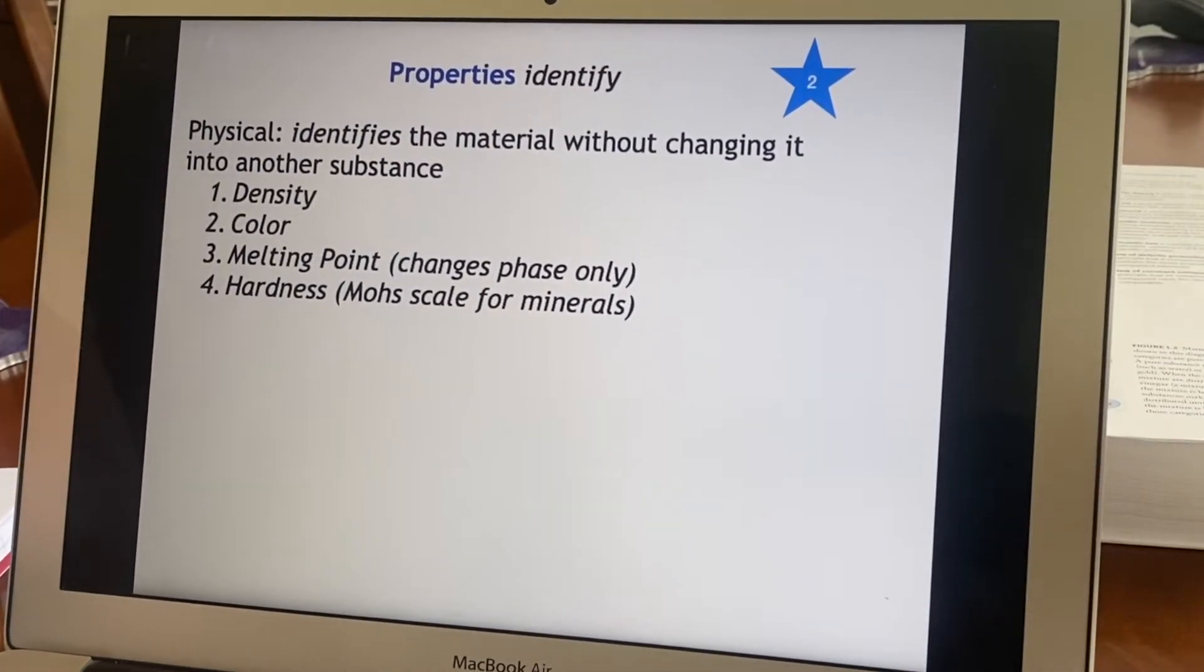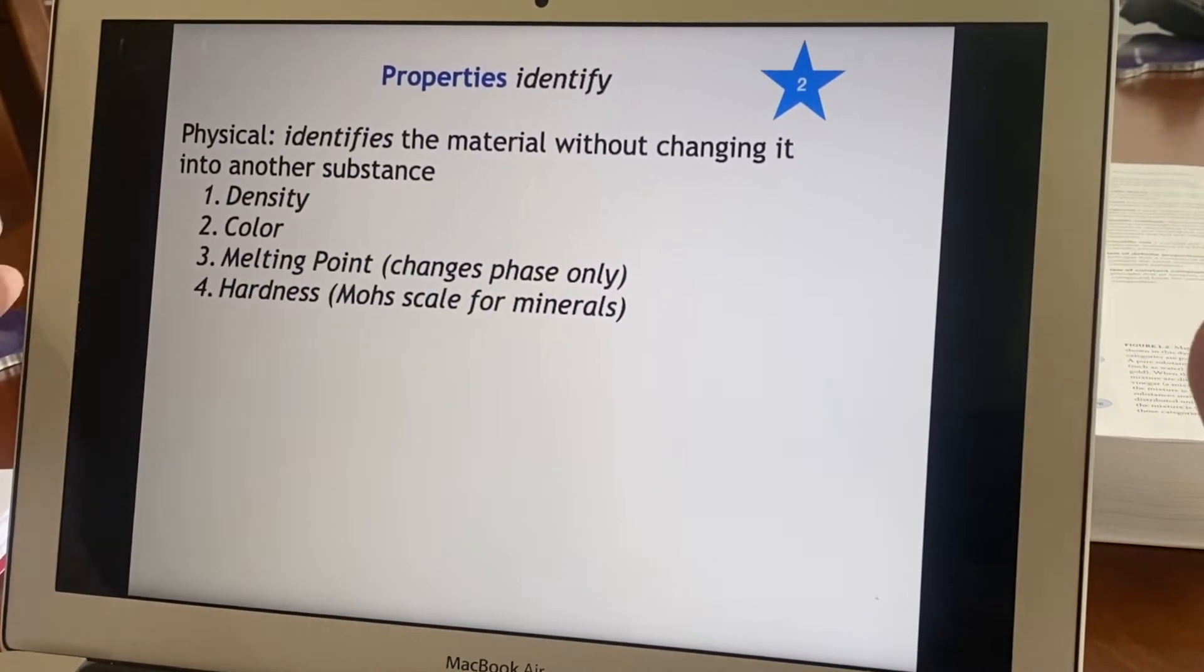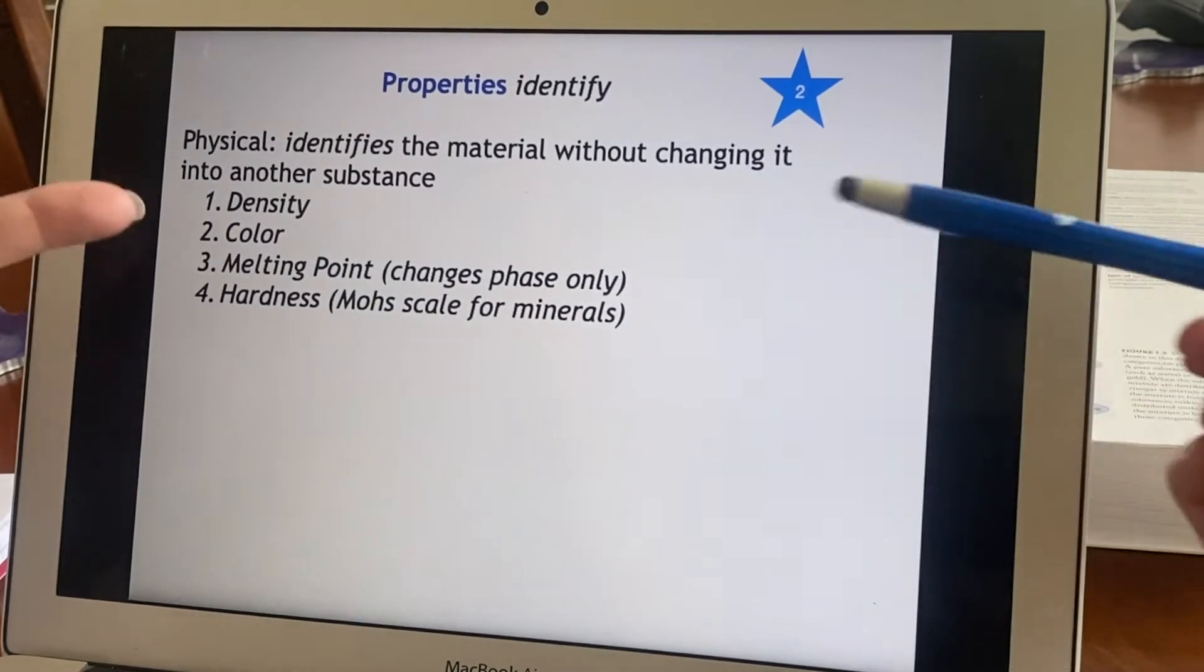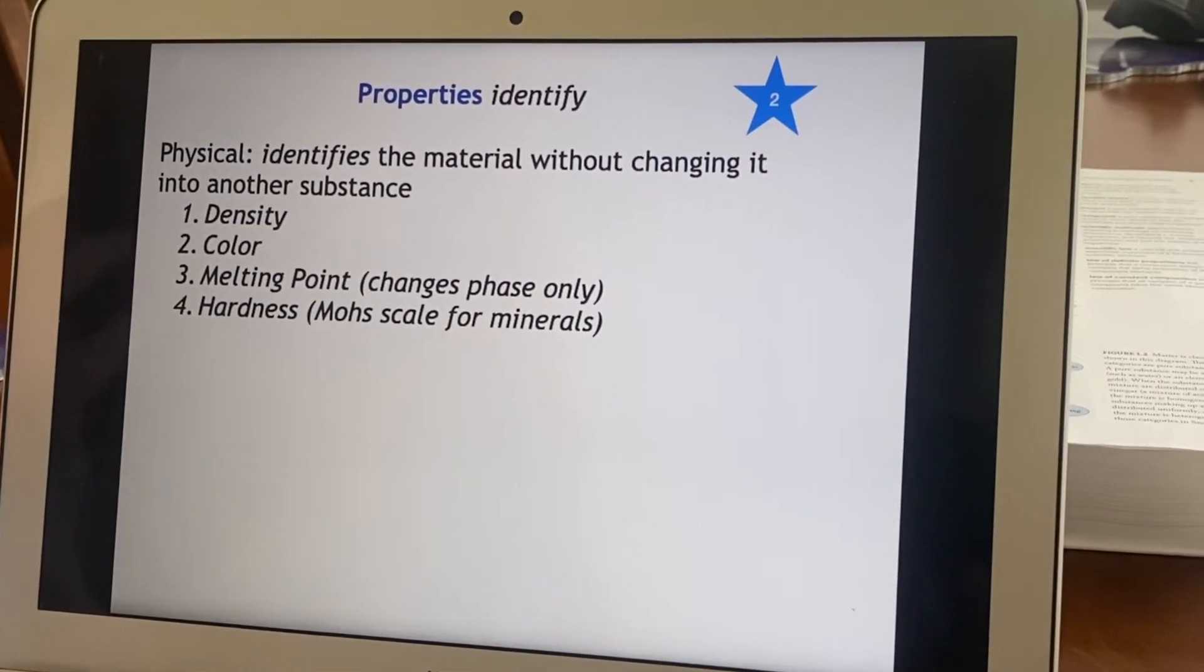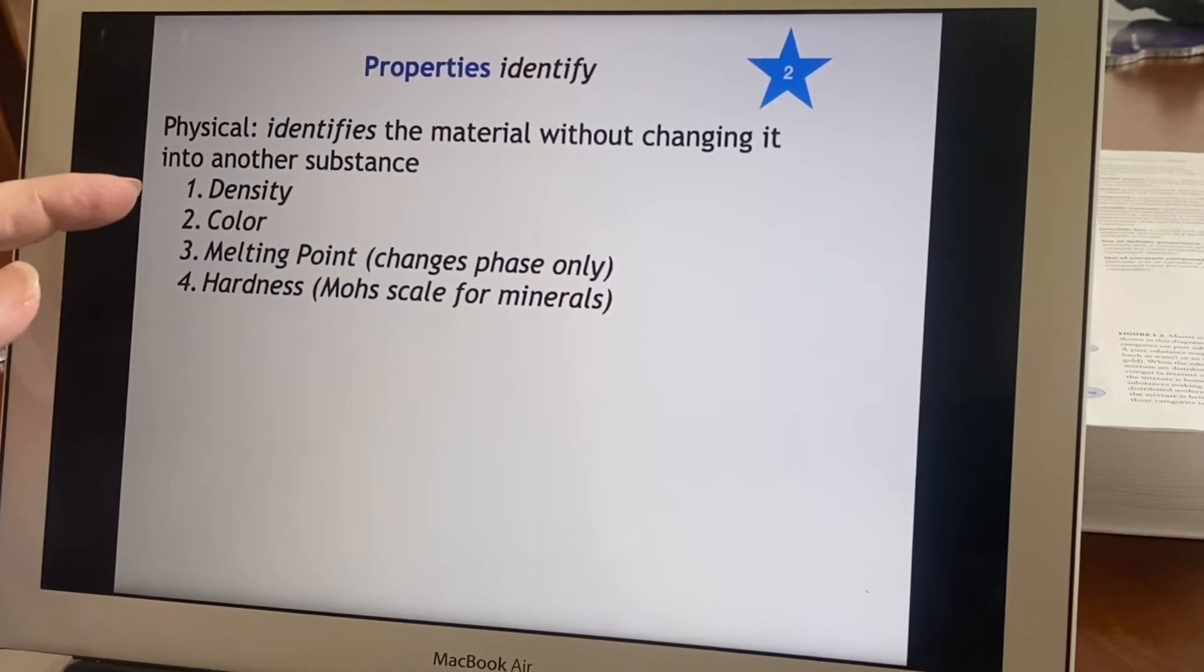We just did an example of that. Color. Well, the reason we thought it might be gold to begin with was because it was a golden color, but that wasn't enough. Sometimes you have to combine these things. So we used the color and we said, oh, well, it could be gold or it could be a fool's gold. Let's go on and use a different one.